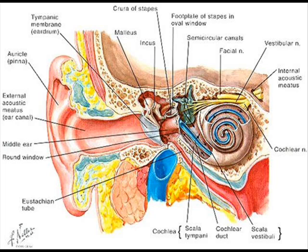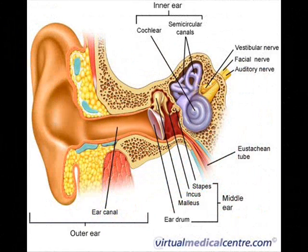Like other mammals, the human ear contains sense organs that serve two quite different functions: that of hearing and that of postural equilibrium and coordination of head and eye movements. The ear has three distinguishable parts: the outer, middle, and inner ear.